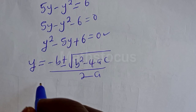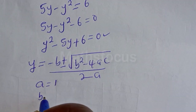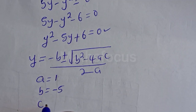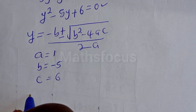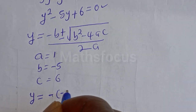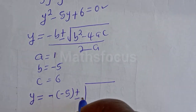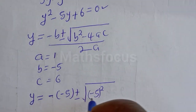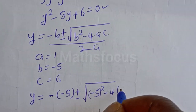From this equation, A is equal to 1, B is equal to minus 5, and C is equal to 6.